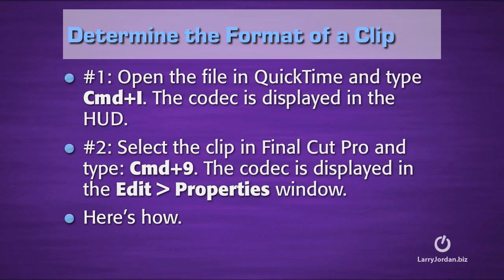Now that we've got some basic definitions down, let's shift gears and figure out how we can determine the format of a clip. There are a variety of ways, but two of the easiest are: first, open the file in QuickTime and type Command-I — the codec information is displayed in the heads-up display called the HUD. Or you can select the clip in Final Cut Pro and type Command-9, and the codec is displayed in the Edit Properties window.